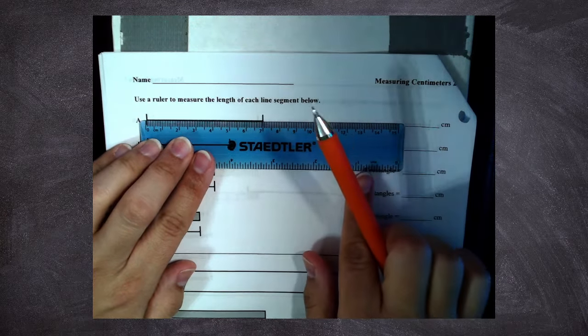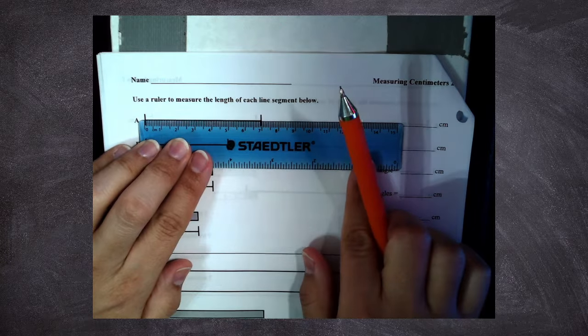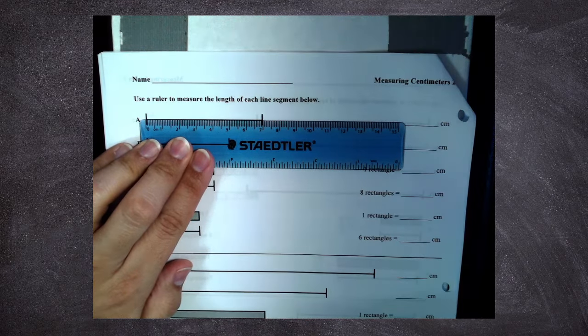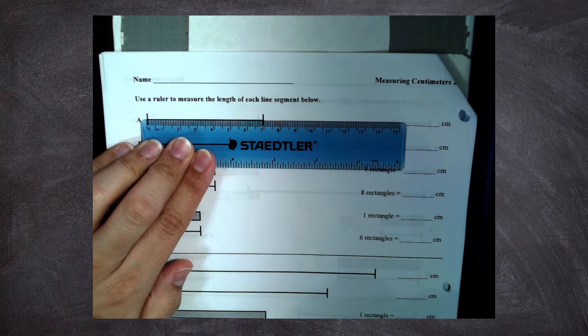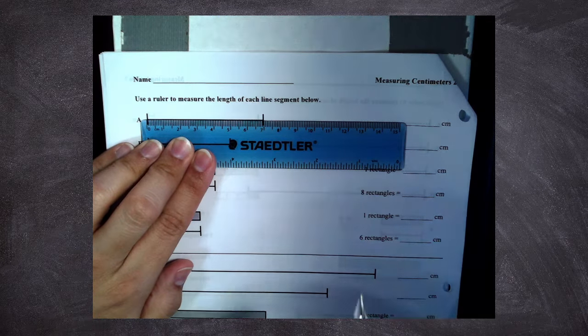Who can tell me? This first line, how many centimeters long is that first line? Ezekiel, seven, very good.